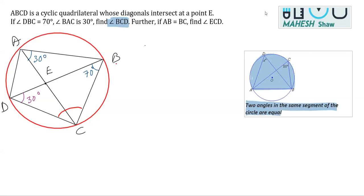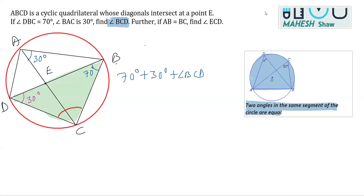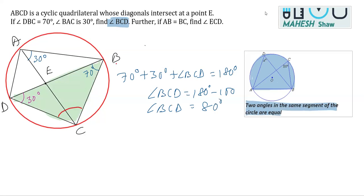Now we have triangle BCD, and we know two of its angles: one is 70 degrees and the second is 30 degrees. The third angle — angle BCD — is what we need. By the angle sum property, the three angles add to 180 degrees, so angle BCD equals 180 minus 100, which gives us 80 degrees.